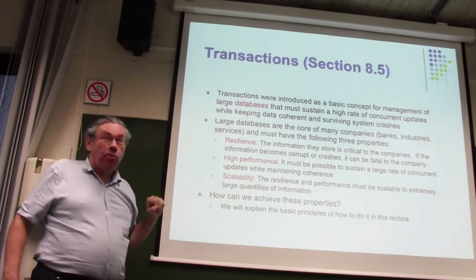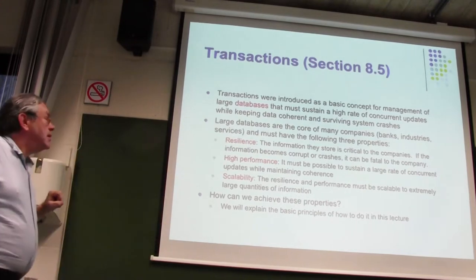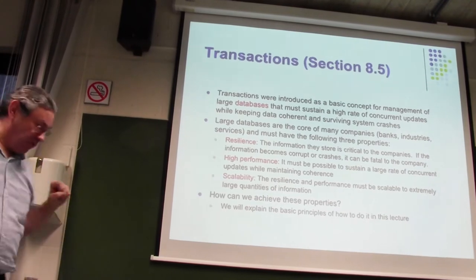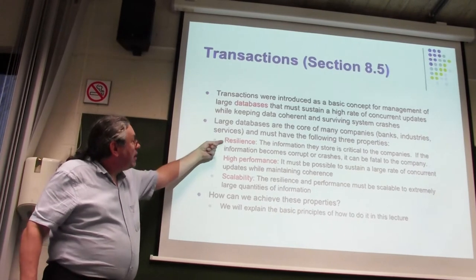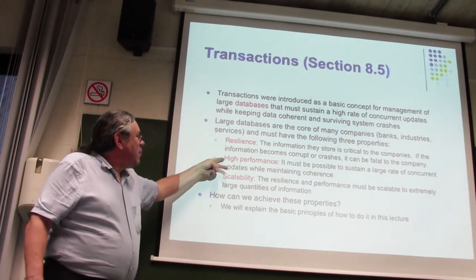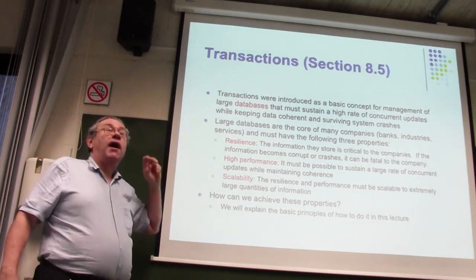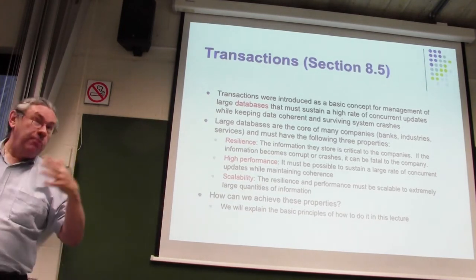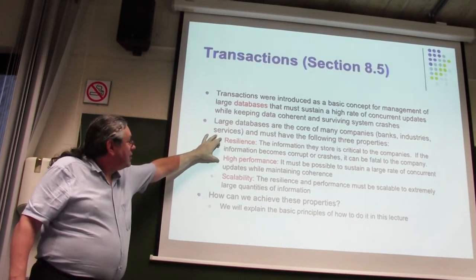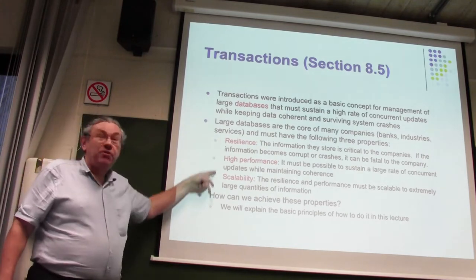These databases have three properties, and transactions are designed for all three. First, they have to be resilient — the information must never disappear or be corrupted because it is critical. Second, high performance: you might have millions of customers and they all want to do things, so performance has to be high. Finally, scalable — you should be able to increase the number of users while keeping resilience and performance at high scale.